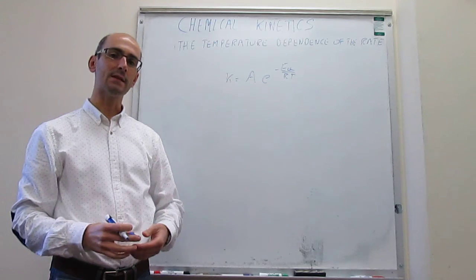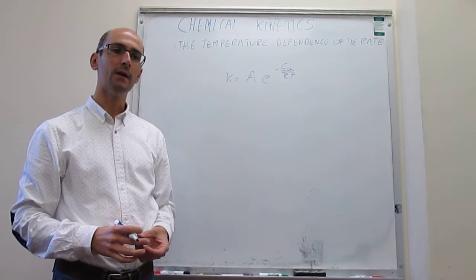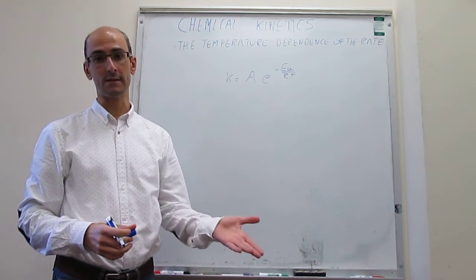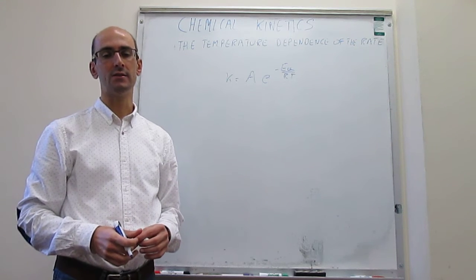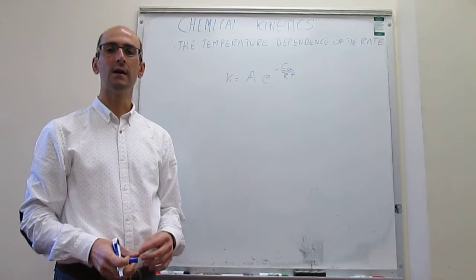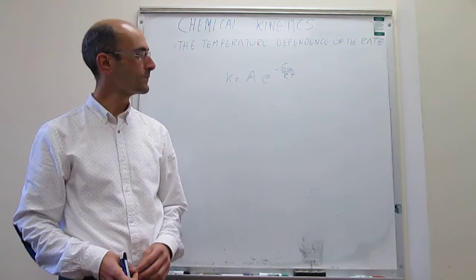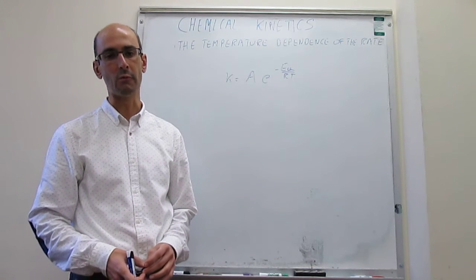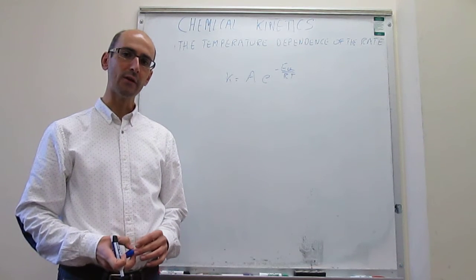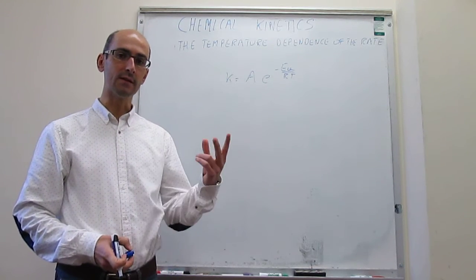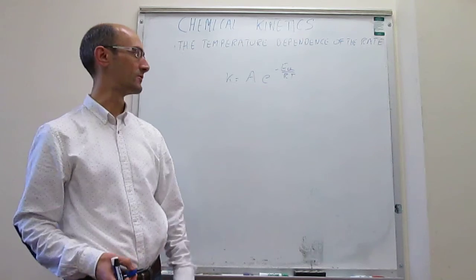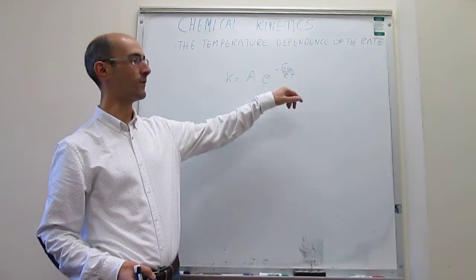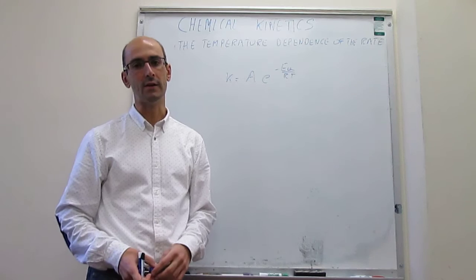So one of the questions that we can ask then is, how much does the rate, or the rate constant of a chemical reaction, change if we change the temperature just a little bit? To solve this type of problem, what we're actually going to do is derive an equation that relates two rate constants at two different temperatures to the pre-exponential factor and the activation energy.